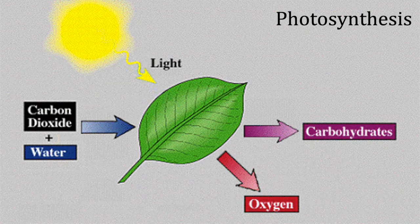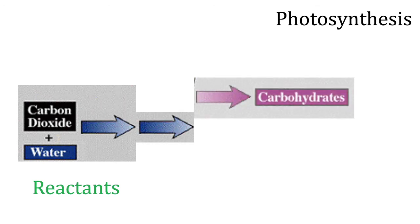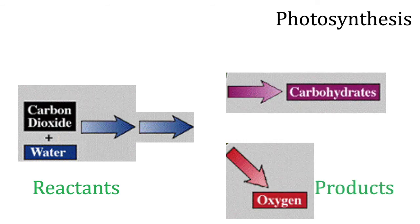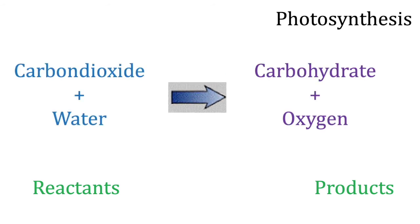More to know about this chemical reaction: carbon dioxide and water are called reactants, which are converted into carbohydrates and oxygen, and these are called products. So let us simplify - carbon dioxide and water are reactants, while carbohydrates and oxygen are products.